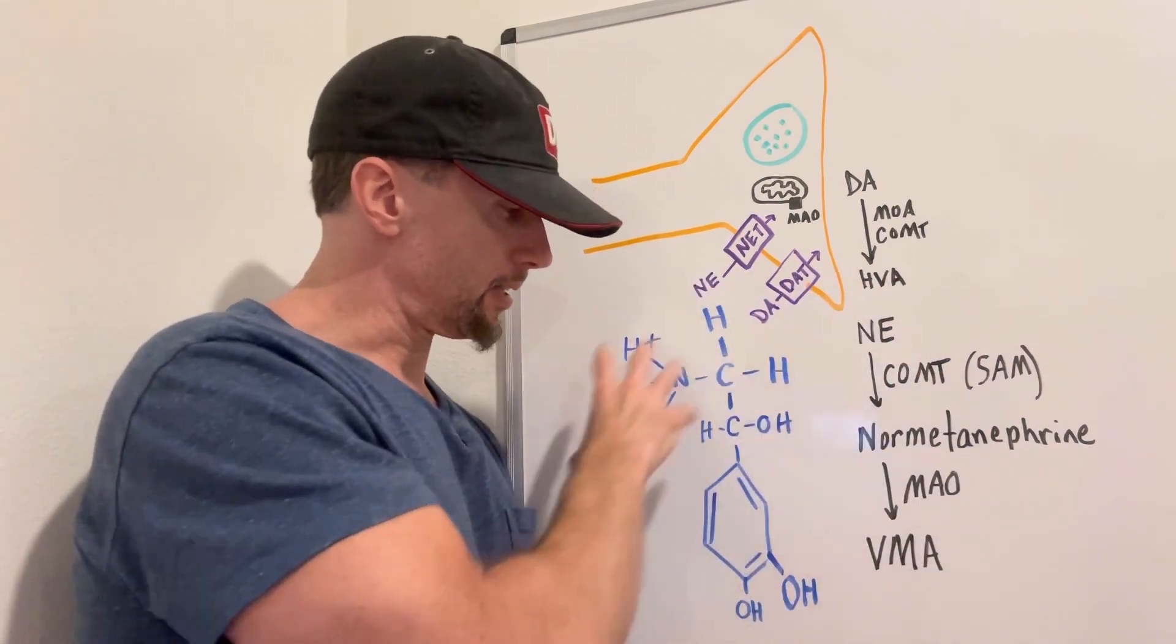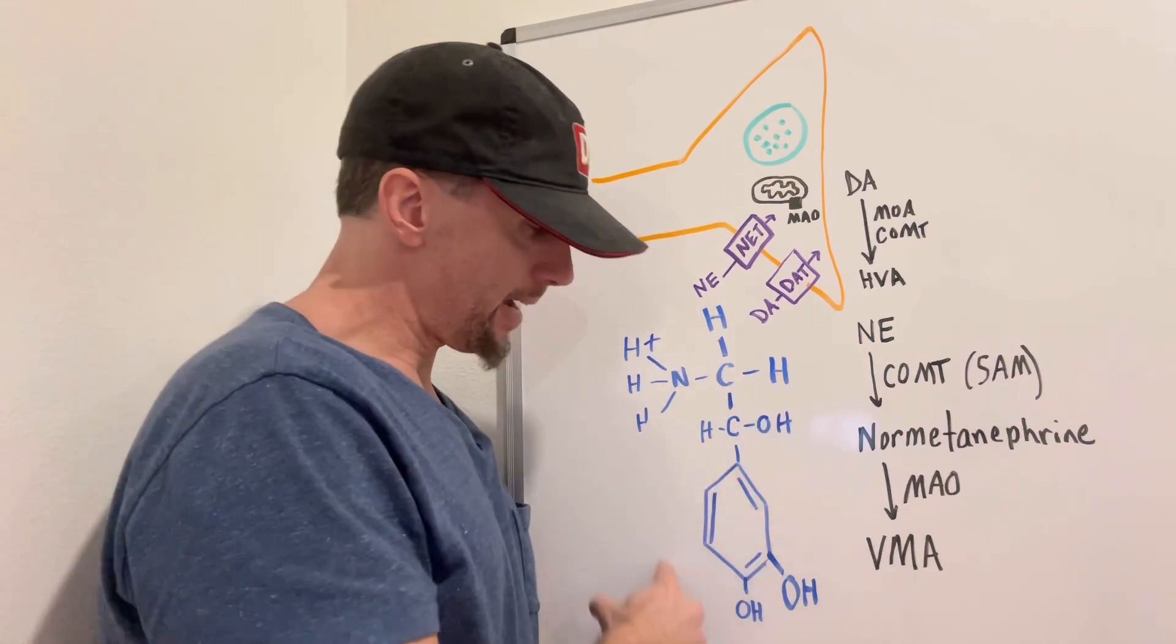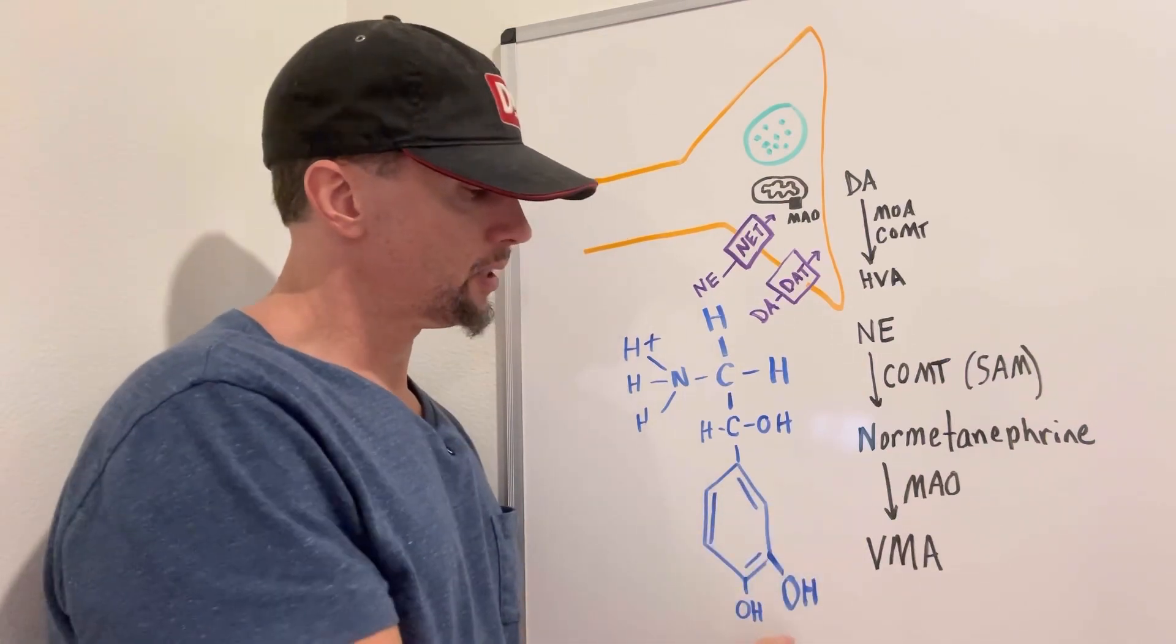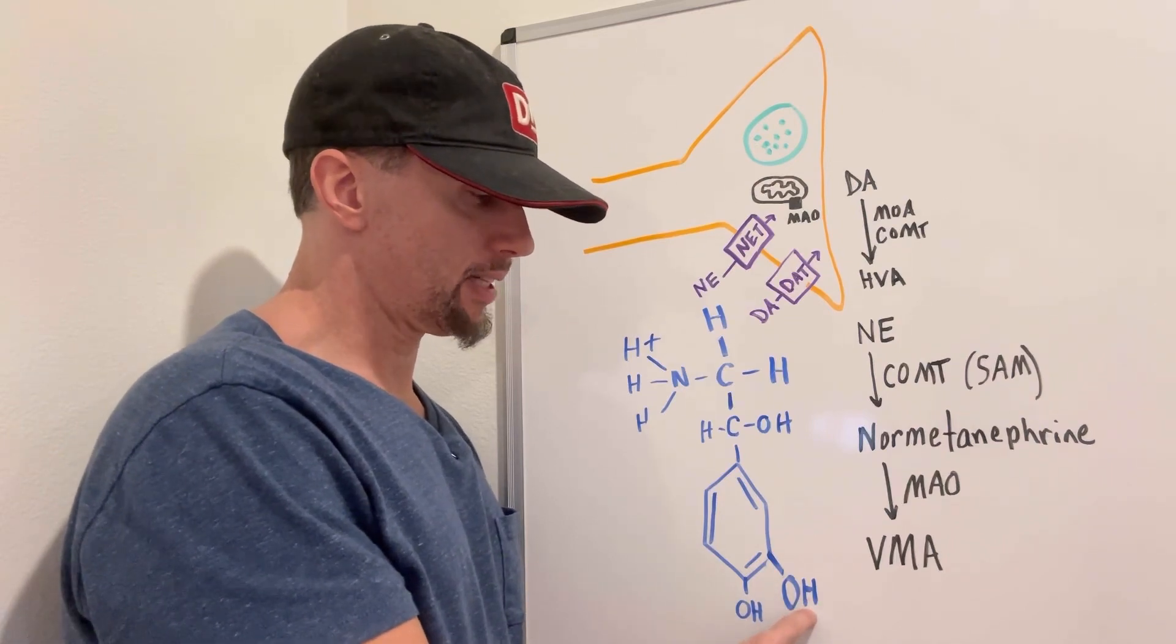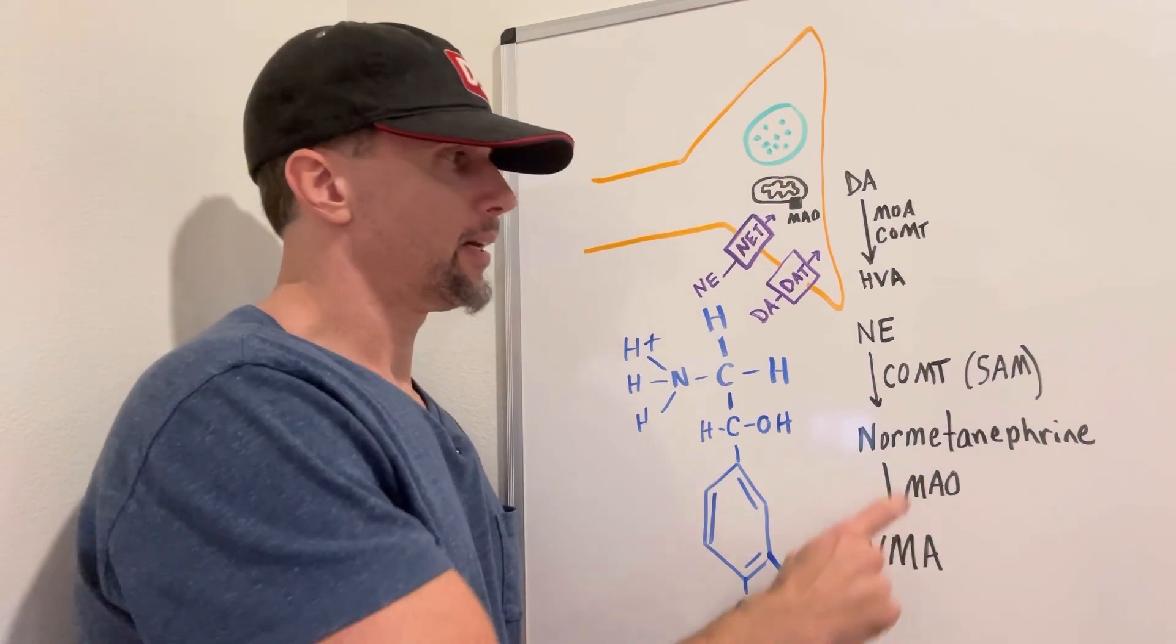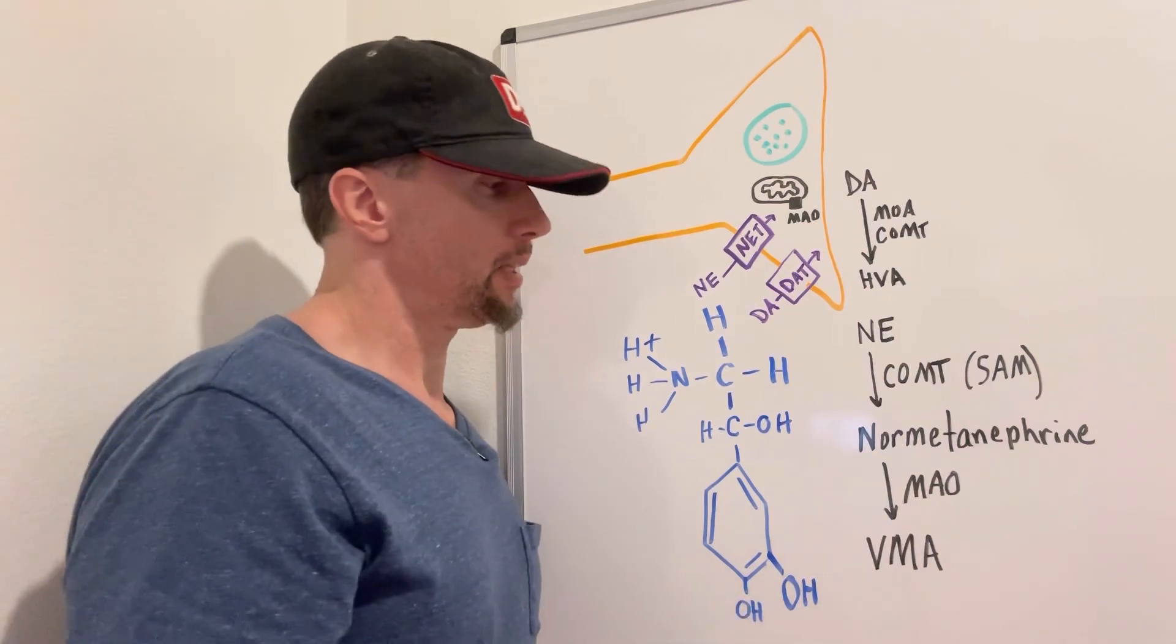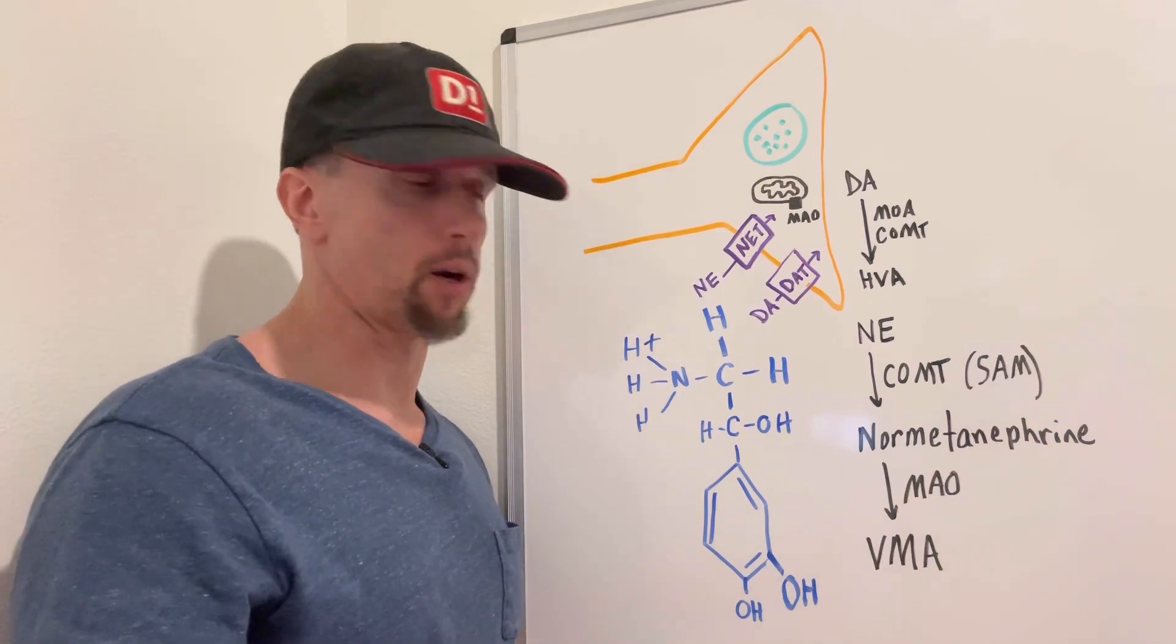So let's look at this. This is norepinephrine right here, and this is the catechol group, and it's a catechol group because it has a benzene ring and two hydroxyl groups. So this particular oxygen will be attached to, instead of a hydrogen here, it'll be a methyl group, a CH3, and that's what COMT does, is it puts that methyl group right here, and it gets that methyl group from SAM, S-adenosyl methionine, the primary methyl donor in our body.